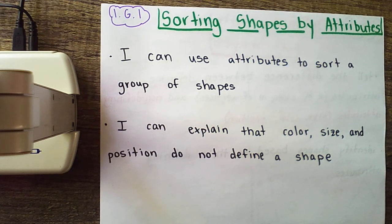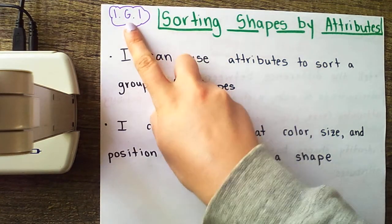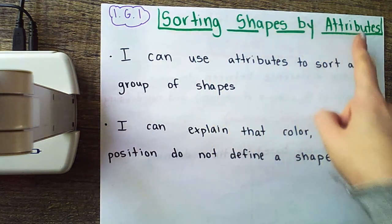Now yesterday we started talking about geometry. We said geometry is just a fancy word for the study of shapes and we were discussing defining attributes of shapes. Today we're going to use the defining attributes of shapes to be able to do some sorting and then explain how we know that those shapes fit in the group. So we're still in 1g1. We're sorting shapes by attributes today.